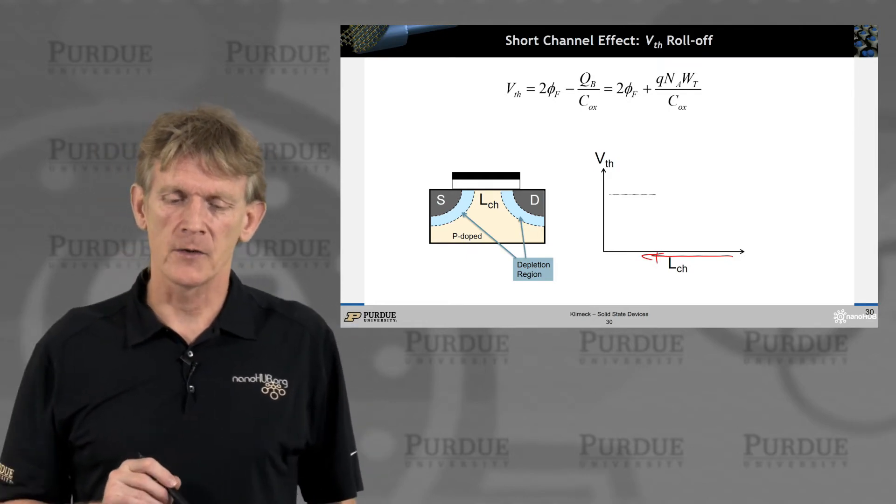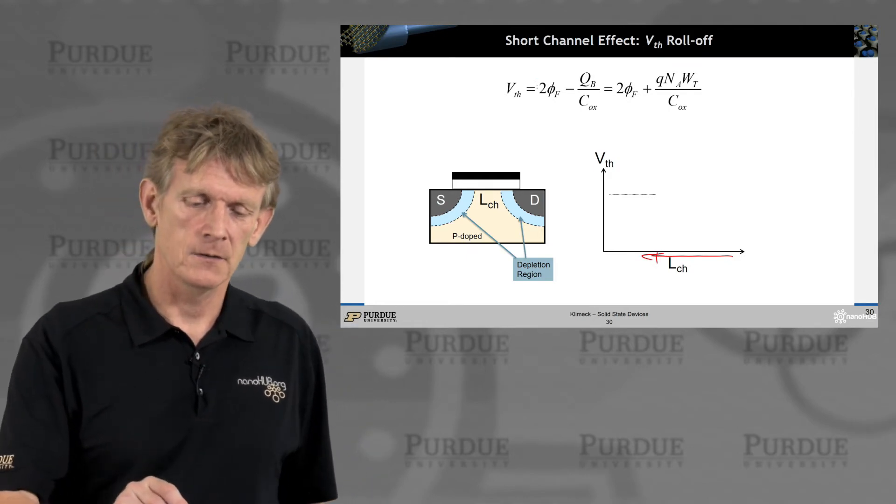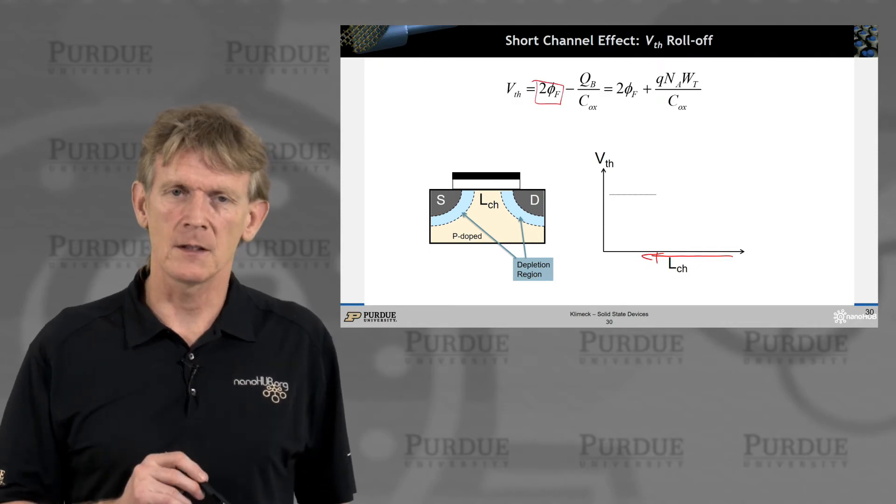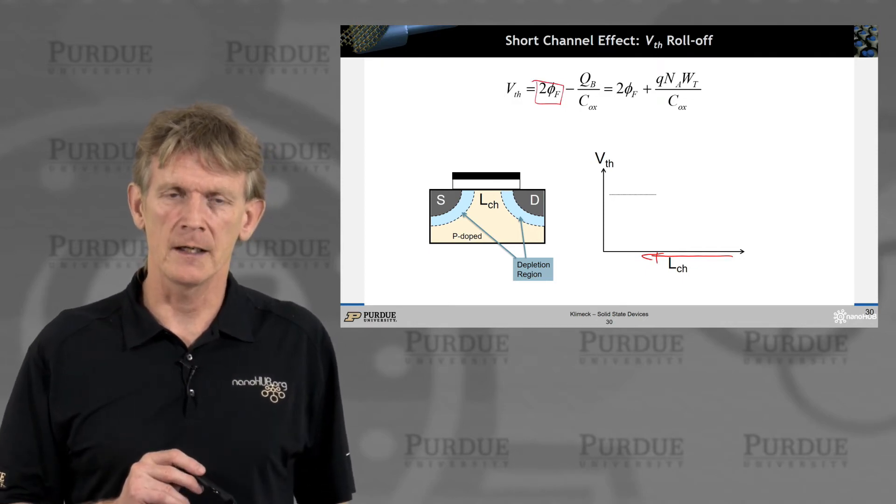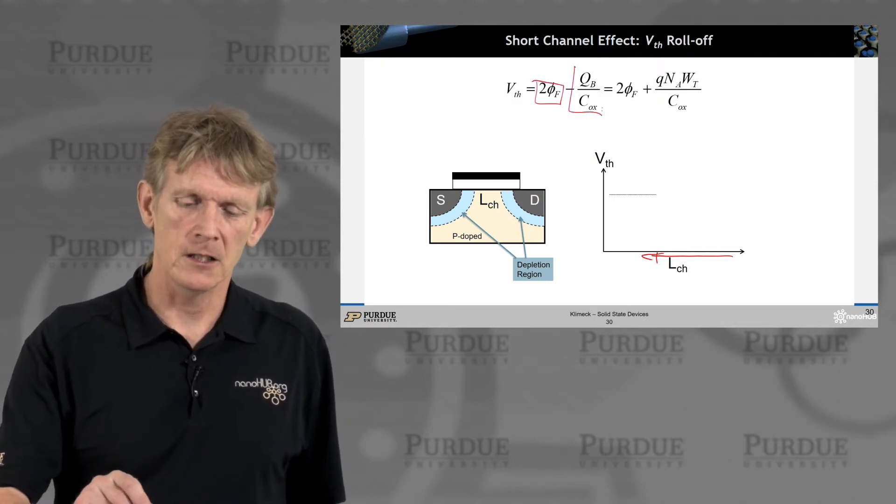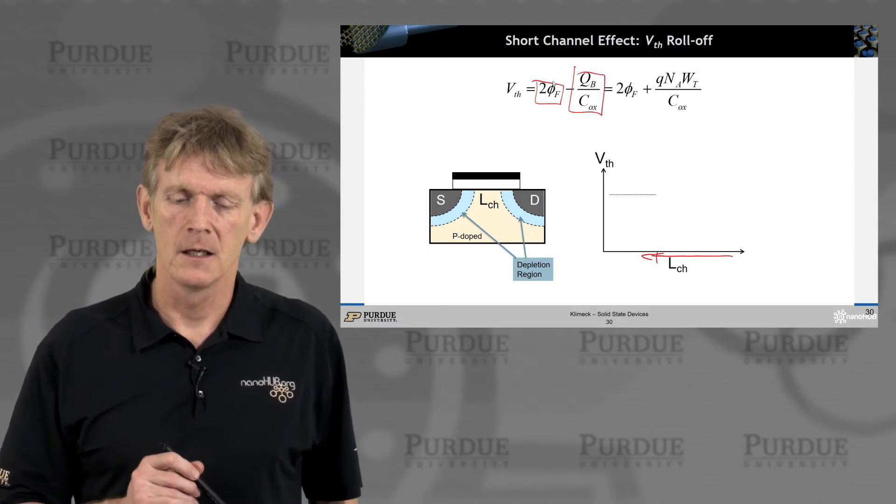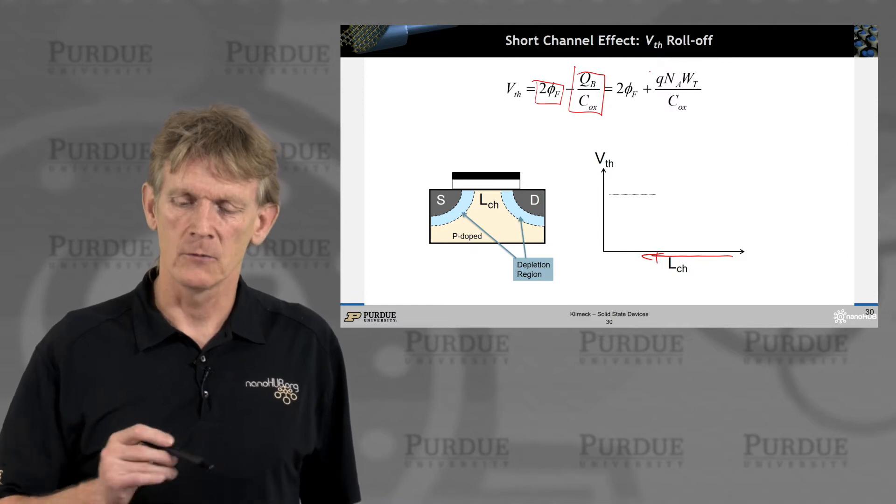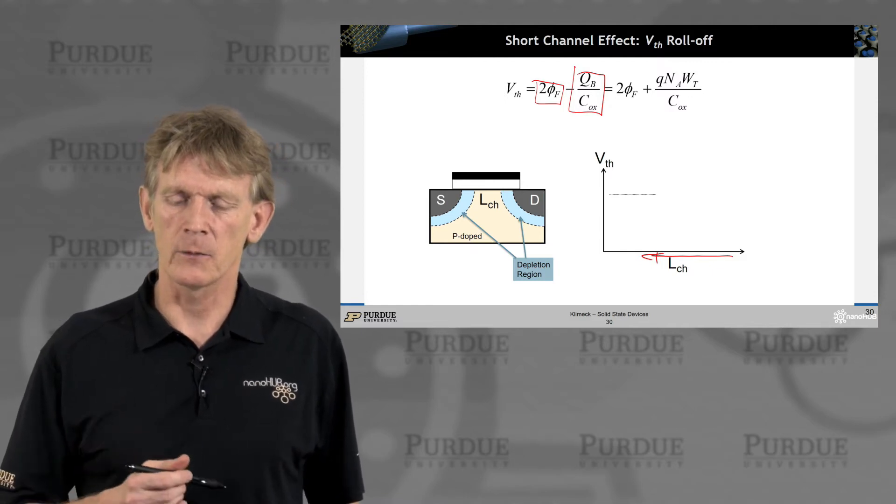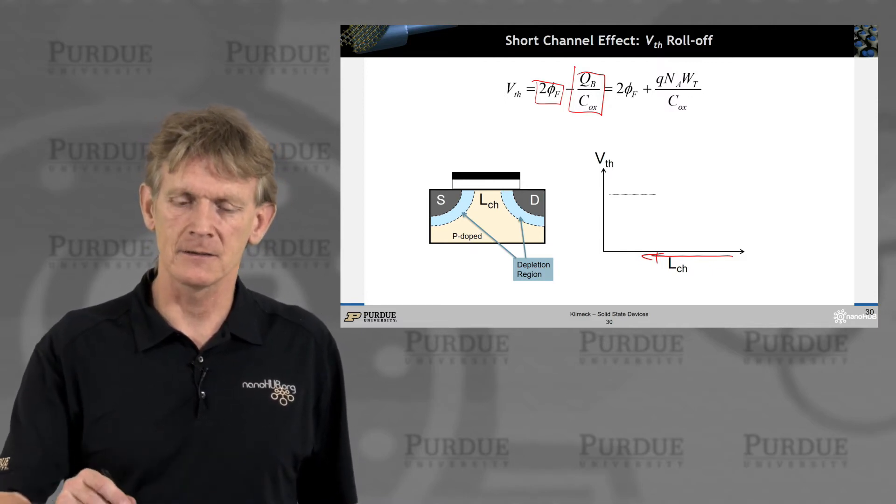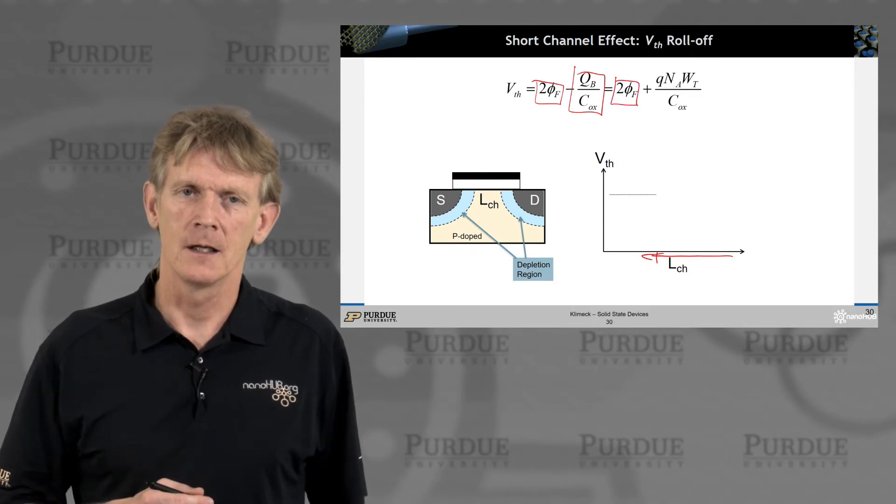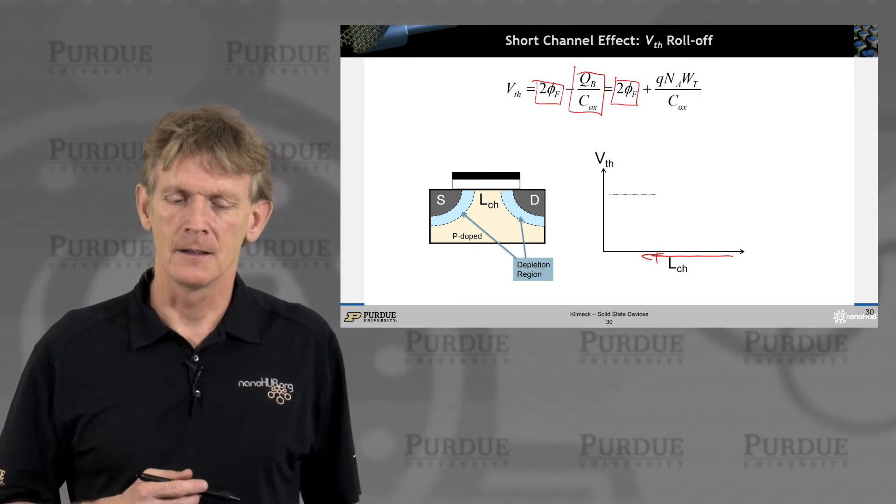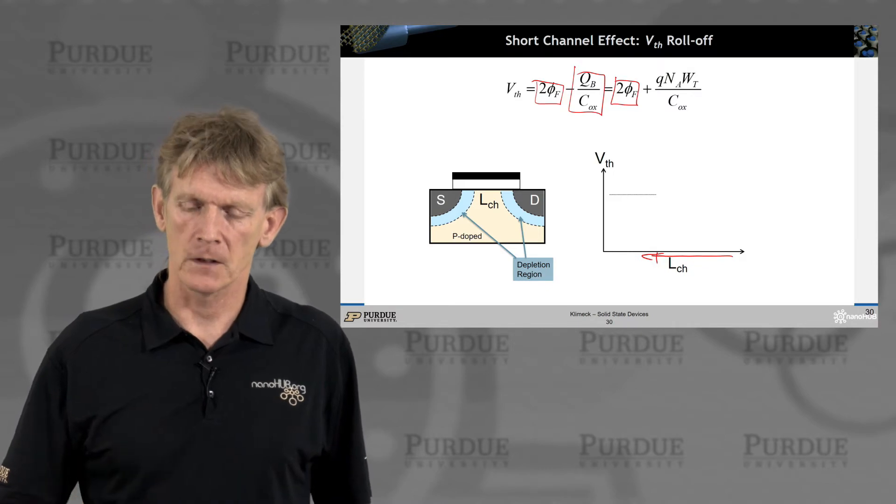We had written down the threshold voltage as the potential in the semiconductor as being 2φf minus the bulk charge. That's your ideal threshold voltage. We have the doping here, the thickness of the depletion region, the oxide capacitance. This is just a term from the doping level that needs to be inverted.